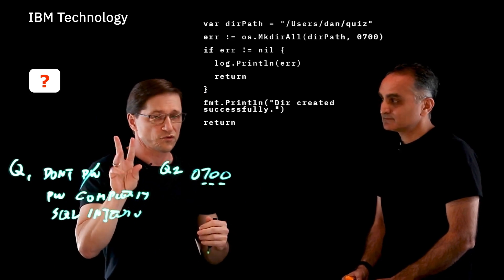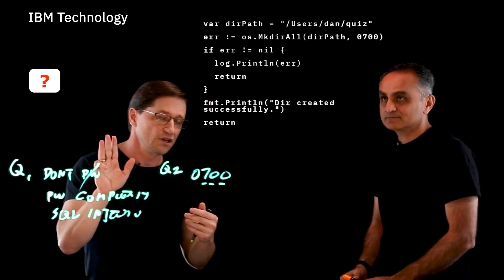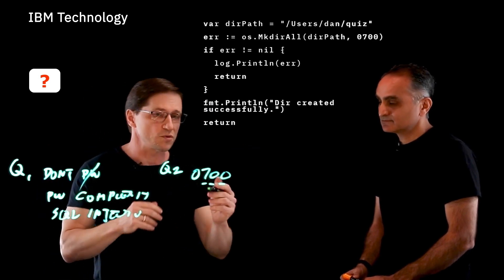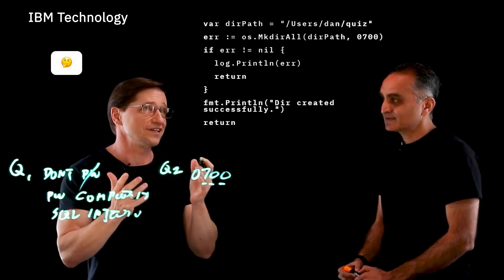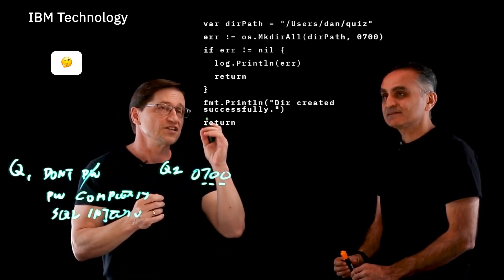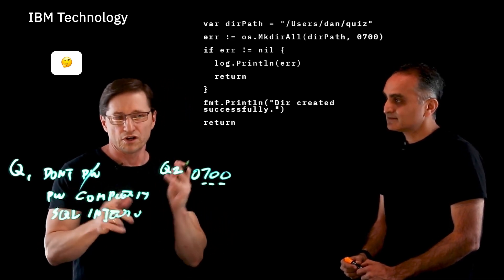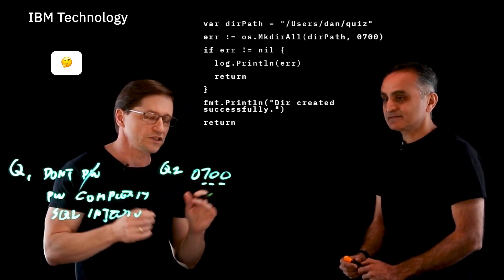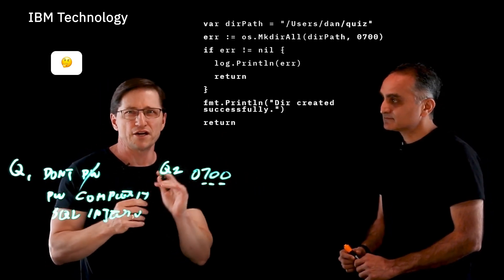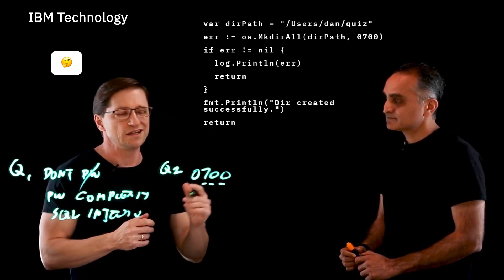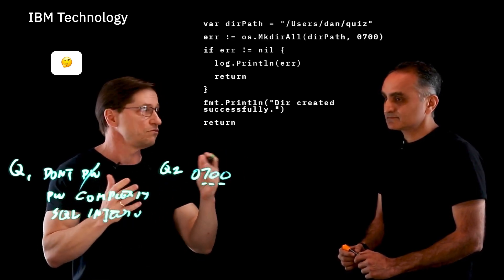This is a three-bit pattern: the seven means execute, read, and write rights. So 0700 is saying the owner can read, write, or traverse it, which is perfectly legitimate, and no one else can. Another common pattern you'll see is 755, which says the owner can do anything they like, and other people can read or traverse.